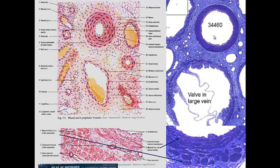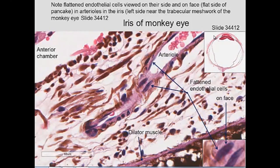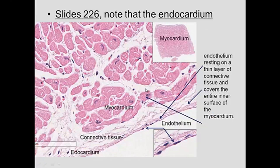Endothelial cells are flattened cells. If you look at them on the side they look thin, but if you look at them face-on — perpendicular to that view — you see that they are more like a pancake: flat on one side but bigger around on the other. The pink you see here is the cytoplasm of the endothelial cell, visible all around these cells.